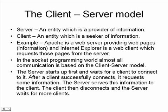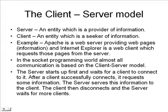How does this whole model work in real operation? A server first starts up and waits for a client to connect to it. After a client successfully connects, the client might request some information. For example, Internet Explorer might ask for the yahoo.com web page from the Yahoo server. If the server has the resource, it sends back that web page to the client, which displays it on your screen. Once this is done, the client disconnects from the server, and the server once again starts waiting for more clients.